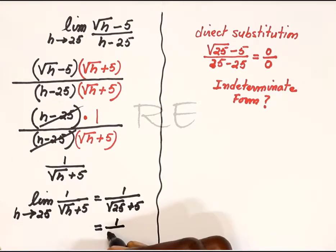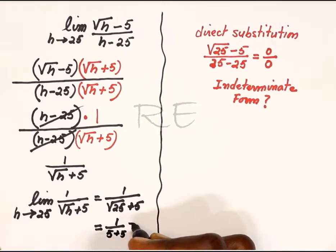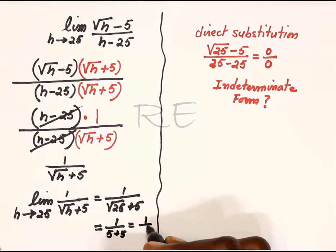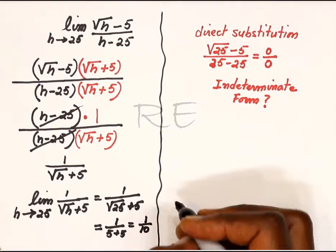So it's going to be 1 over 5 plus 5, which is 1 over 10, and this is our answer.